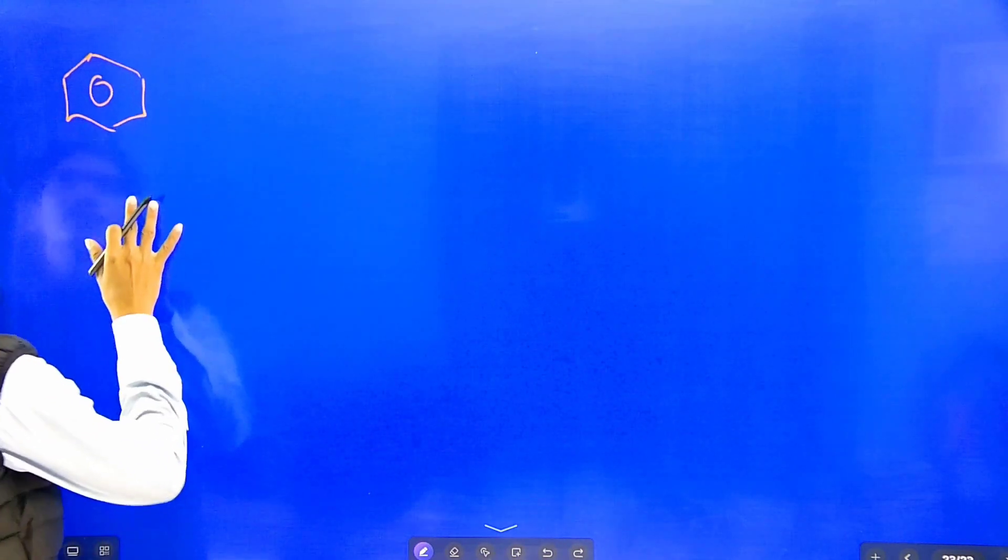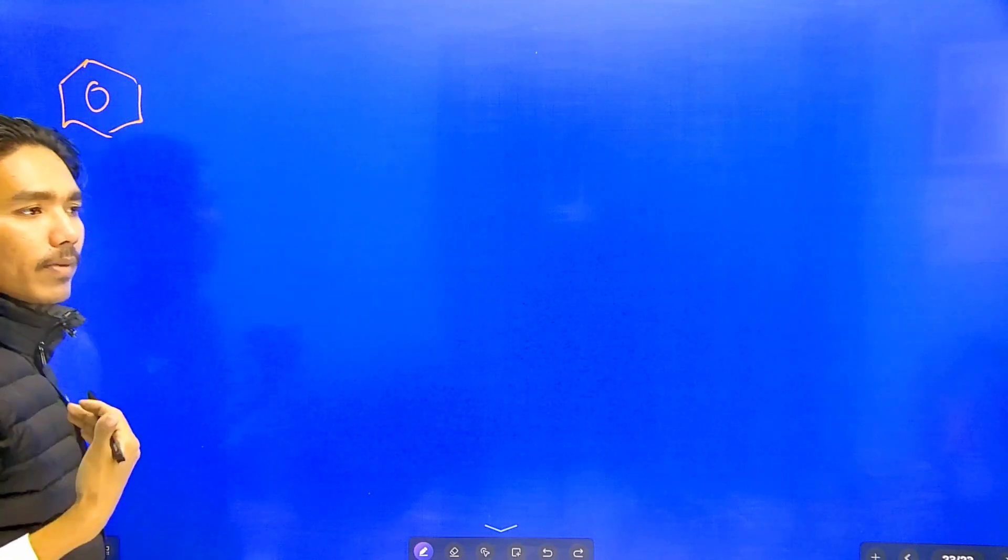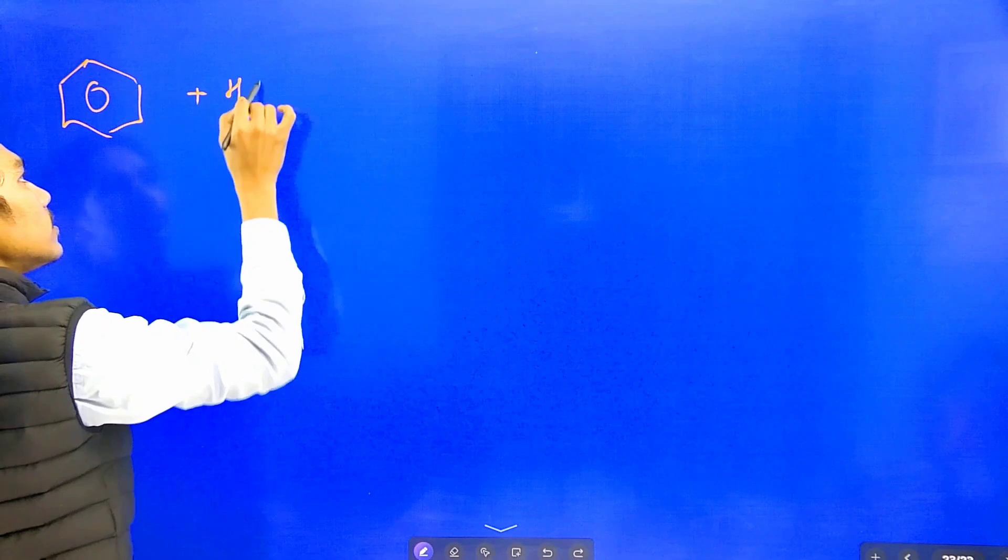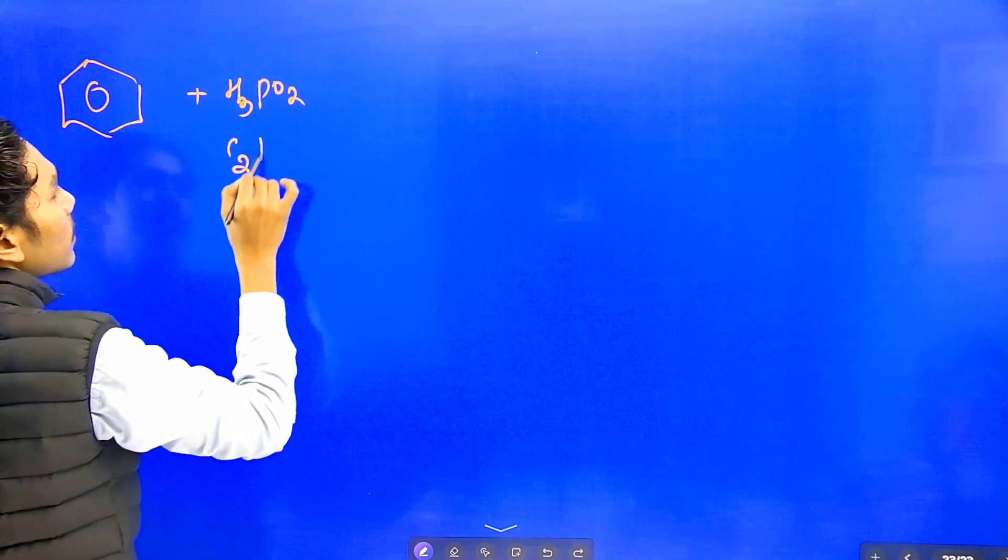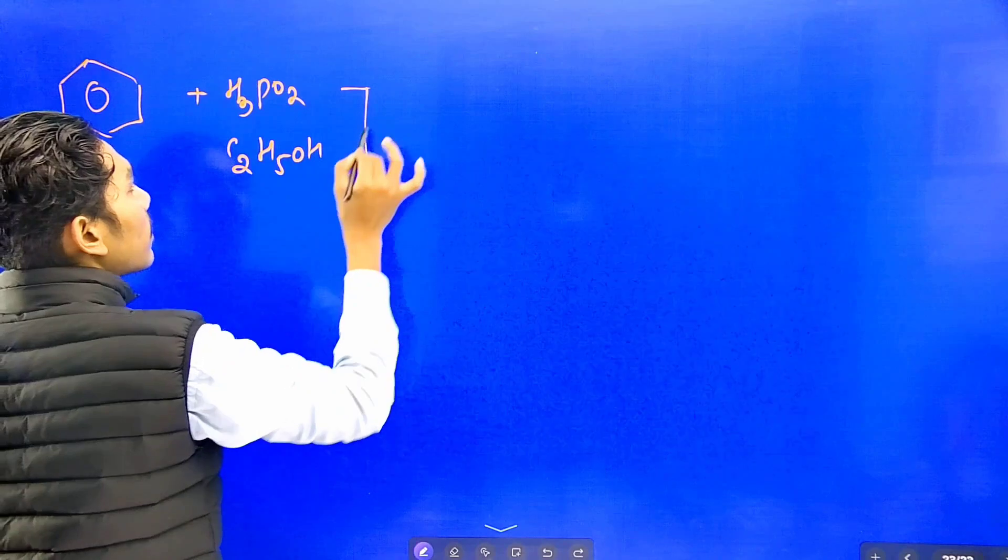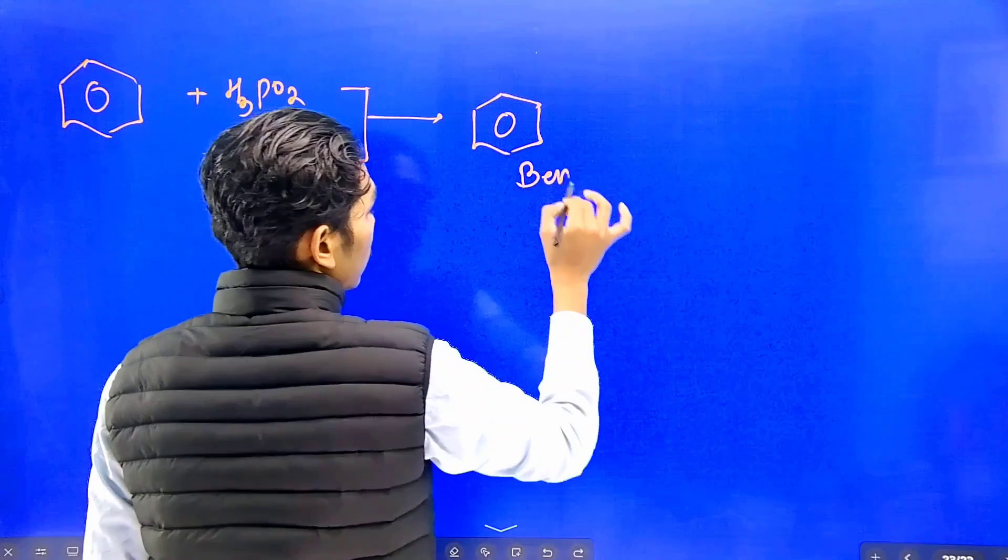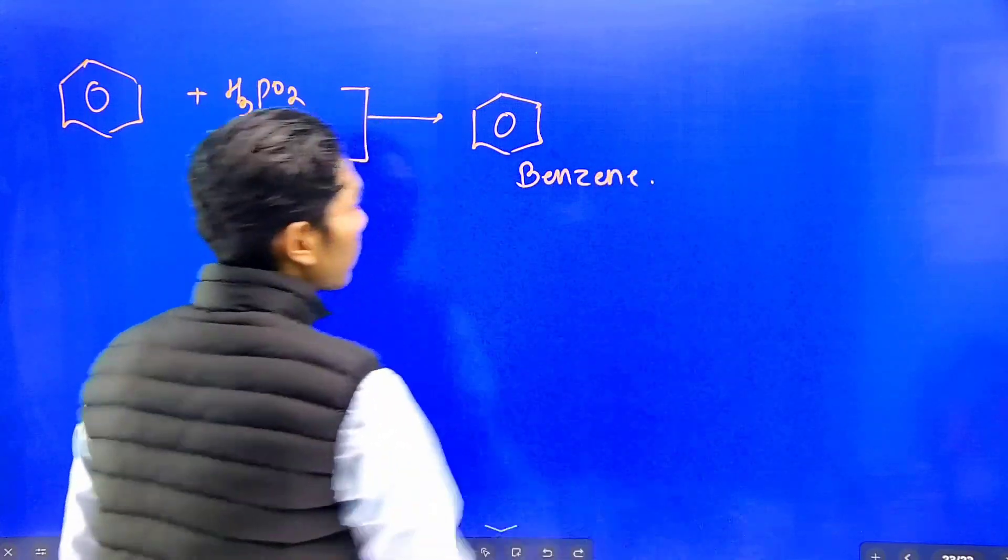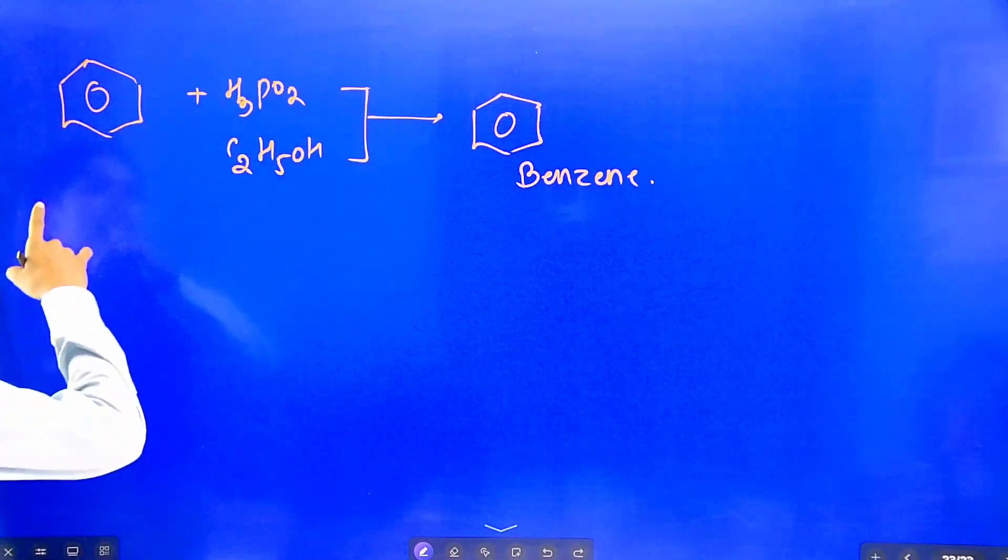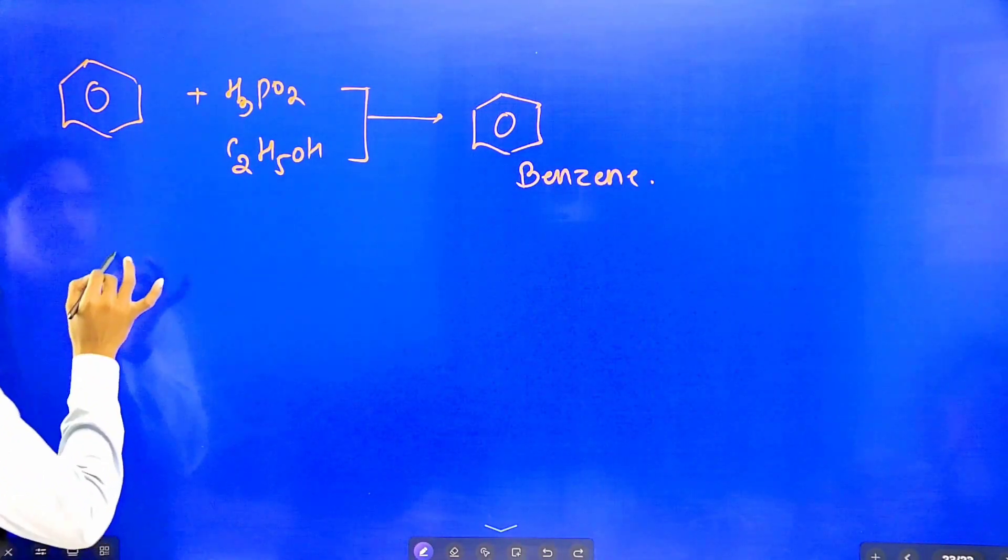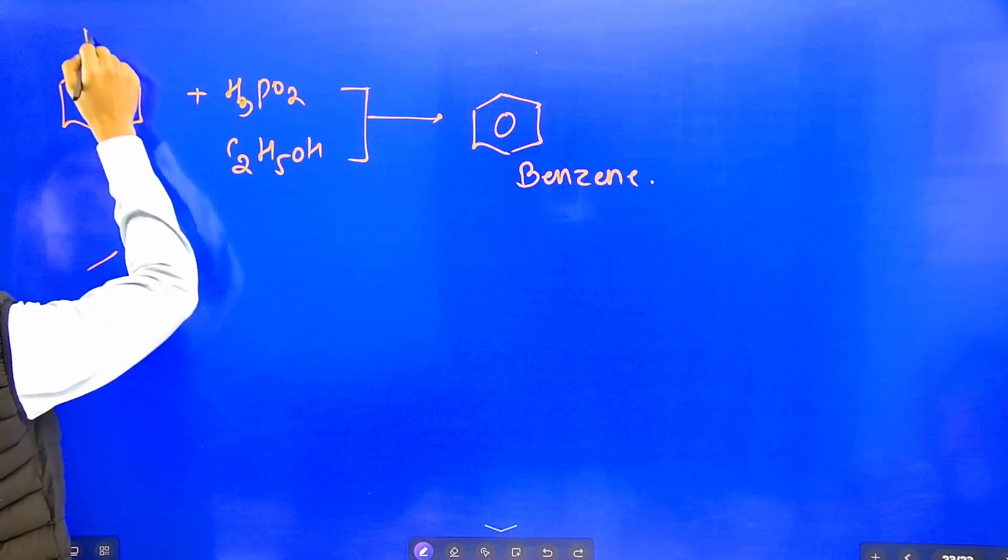We will see this reaction. If we react benzene diazonium salt with H3PO2 or with C2H5OH, ethanol, what product is formed? Benzene is formed. So to prepare benzene from diazonium salt, we use H3PO2 or C2H5OH.